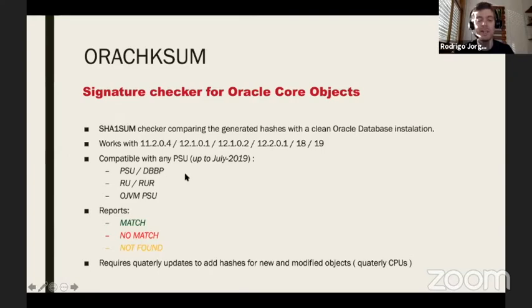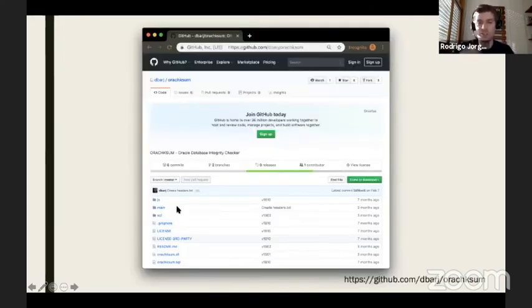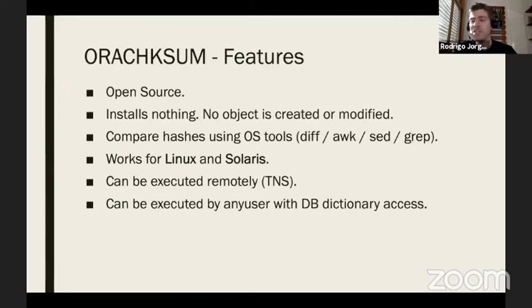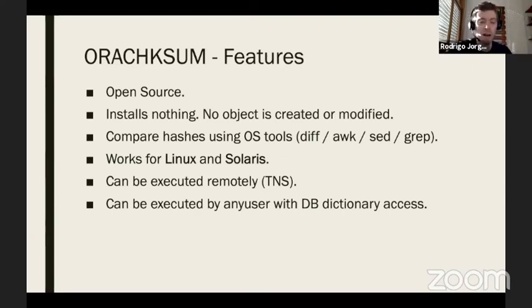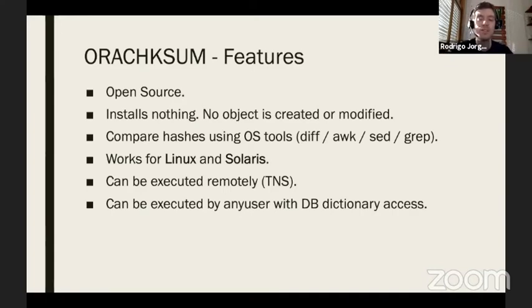ORA Checksum is quarterly updated to include the latest PSUs and bundle patches deployed by Oracle. It's open source, available on GitHub, and you don't need to install anything — it uses underlying OS tools. It only works on Linux or Solaris, not Windows, though it may work with Cygwin. It can be executed remotely, so if your database runs on Windows you can run the tool from a Linux client via TNS. Any user with read-only privilege on the data dictionary can run it.